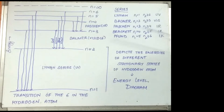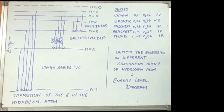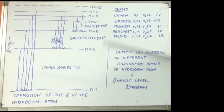Paschen is when n1 is equal to 3 and n2 is greater than or equal to 4. Brackett is n1 equal to 4 and n2 greater than or equal to 5. Pfund is when n1 is equal to 5 and n2 is greater than or equal to 6. All three — Paschen, Brackett, and Pfund — lie in the IR region. n1 is the state the electron transitions to, and n2 is the excited state.